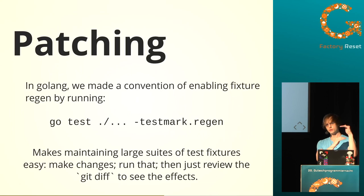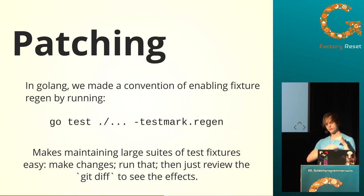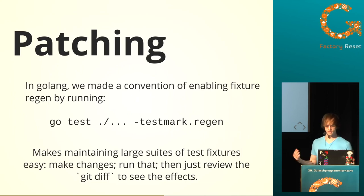Some part of the TestMark file might be: here's my fixture data, like my world setup. Then I have some code in my project that's doing the data transformation, and then I have another hunk which is an output. I can have the series of callbacks in my test setup code regenerate that output. Then I just review with git diff — super high productivity.